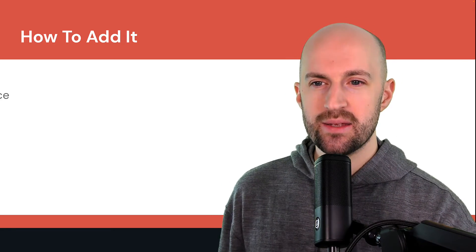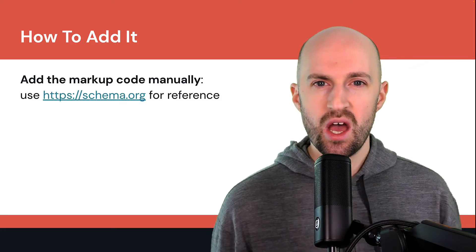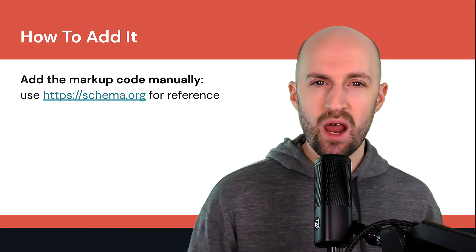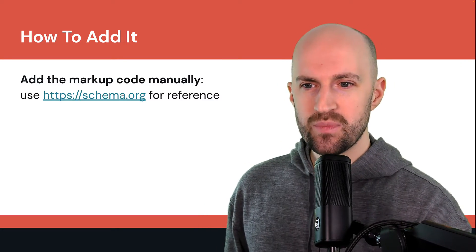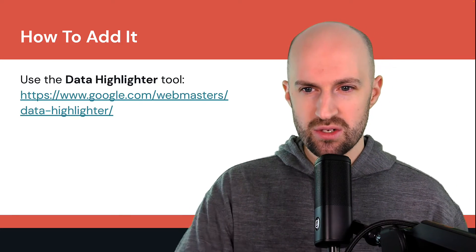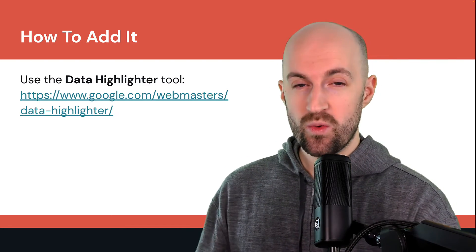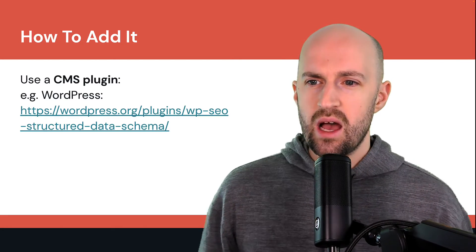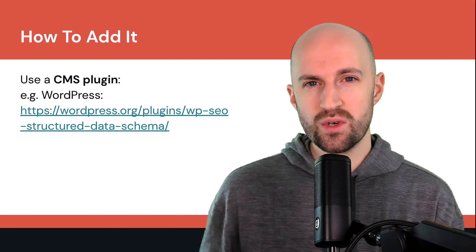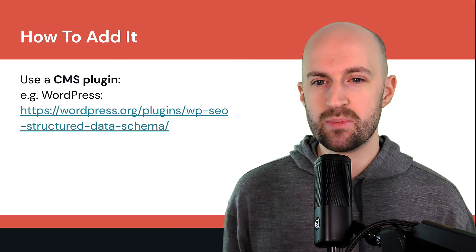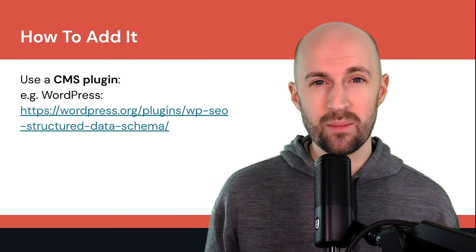Now, how do you add it to your website? You can add the markup code manually — just copy and paste it in HTML on the page around the content or data that you want to tag up. You can use schema.org for reference to see what entities you need to tag up, and it gives you examples showing you how to do that. Or you can use the data highlighter tool in Google Search Console, which has a data highlighter tool you can use to generate some schema or structured data results. Or you can use a CMS plugin — so if you use WordPress, Wix, or Squarespace, many of these have plugins that allow for structured data. In this case, for WordPress, you can use the WP SEO Structured Data Schema plugin — download it, install it, and use it to tag up different entities on your site.